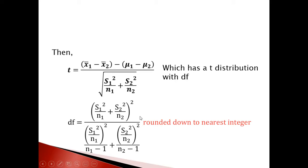The resulting degree of freedom value can be an integer or not. If it is not an integer, you have to round it down to the nearest integer. For example, if you get a degree of freedom of 5.3, you round down to 5.